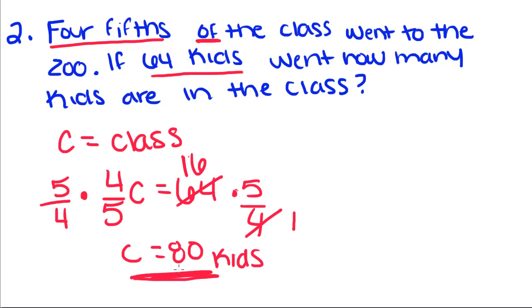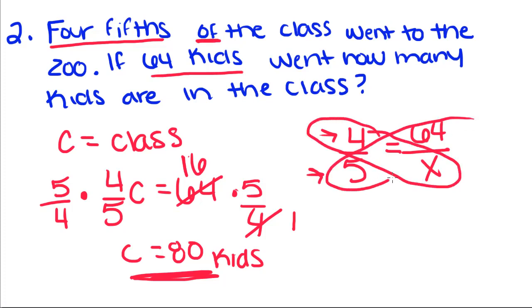Remember a while ago we talked about proportions? Well, if we were to write this as a proportion, it would be 4/5 is equal - and since this is the smaller number and this is the total, we're going to put 64 over x. And if we cross multiply, we're going to get 4x is equal to 64 times 5.